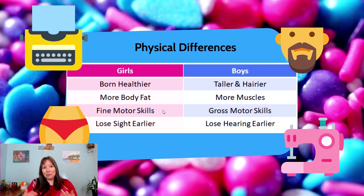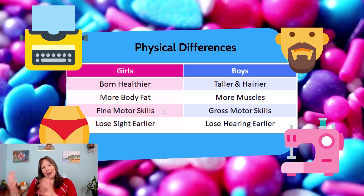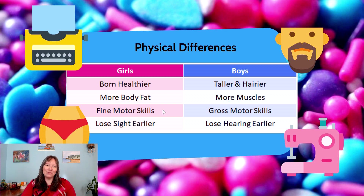Interestingly, gender stereotypes tend to change across cultures and within generations. Most computer engineers originally were women, and most people using computers were women, because of the fine motor skills and dexterity required for keyboards. Now computer scientists are largely men, so that has really flipped and changed.